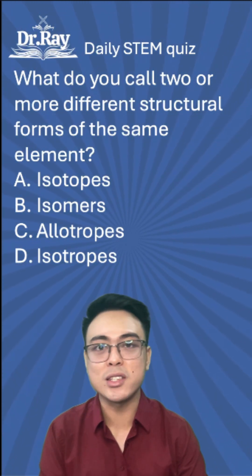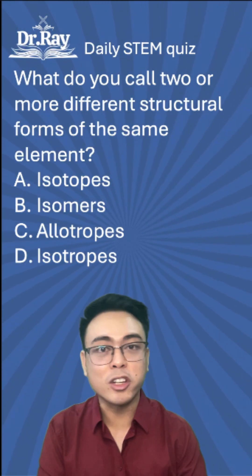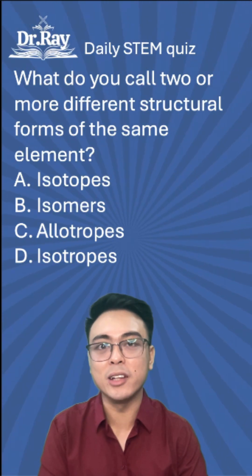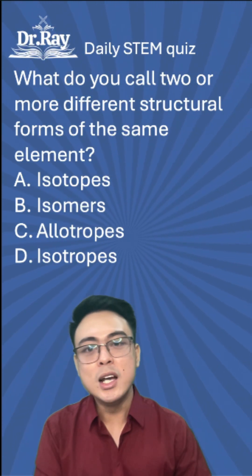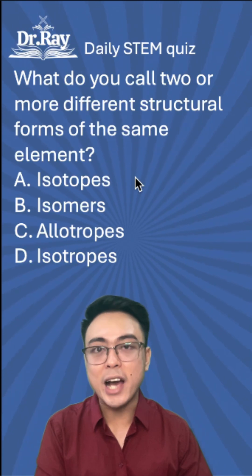An example of this is diamond versus graphite. Both are made of carbon, but they don't look the same, and they also have very different properties. Do not confuse allotropes with isotopes.